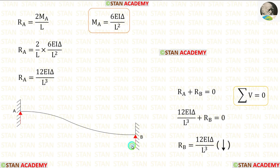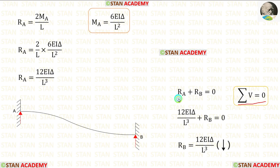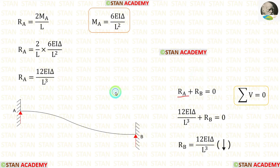Let us assume RB is also acting upwards. Let us apply the rule Sigma V = 0. Since RA and RB are acting upwards, both of them are positive. Here, let us apply the value of RA.